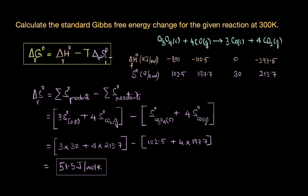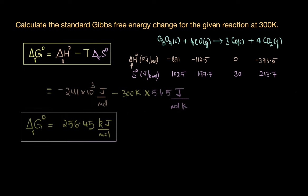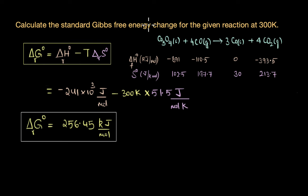The next step is to substitute the ΔH°r and ΔS°r values into the Gibbs free energy equation. The final answer for the standard Gibbs free energy change for this reaction comes out to −256.45 kJ/mol.